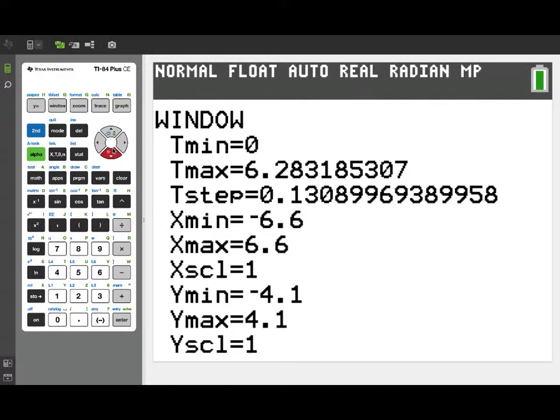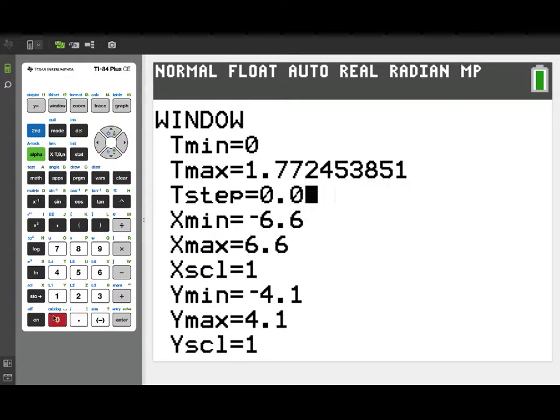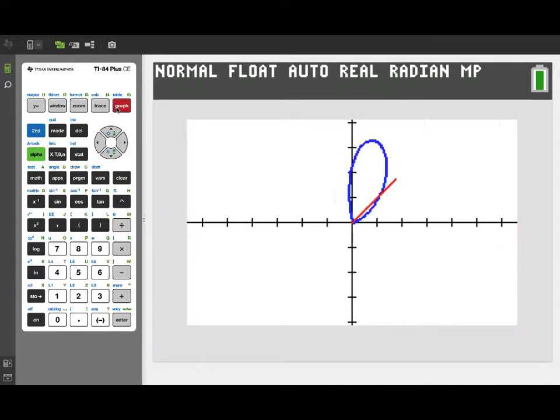I've gone to the window settings. I'm going to set tmin to 0, tmax to square root of pi, because t is now playing the role of theta. And our t-step, we'll want at least 100 points. I'm going to set that to 100th of my tmax value, or approximately that much, 0.0177. That will give us 100 points on the curve. And now let's take a look at the graph, and there we have our original petal and a part of a line. That's because we've only plotted for values from t, 0 to square root of pi, and you can see it has slope 1.